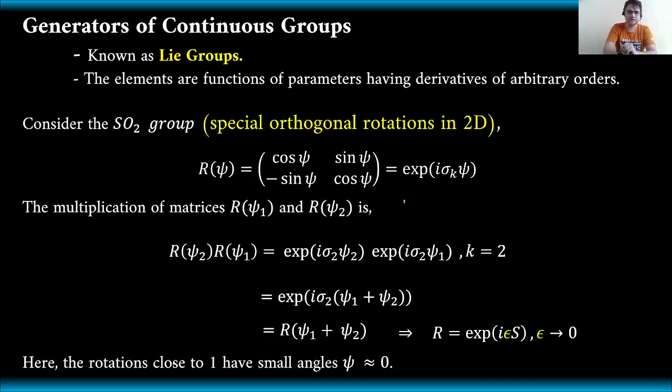Suppose we consider this special orthogonal rotations in two dimensions. If we have these coordinates, say we have here the X, Y, Z axis - suppose this is the X axis, this is the Y axis, and this is the Z axis. We just want to rotate the X and Y. So suppose we rotate this one counterclockwise in such a way that Z is unaffected.